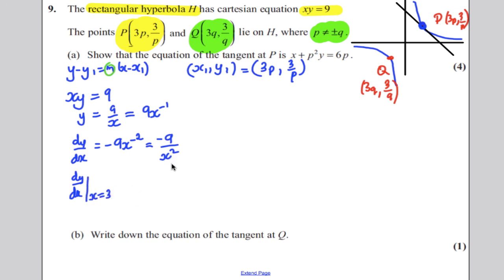So we're going to get -9 over (3p)², which is -9 over 9p², which will end up being -1/p² if you cancel the 9s. Now, that's the gradient at that point.